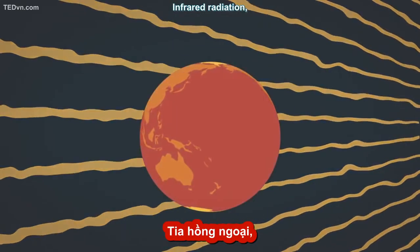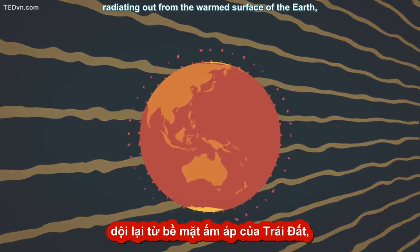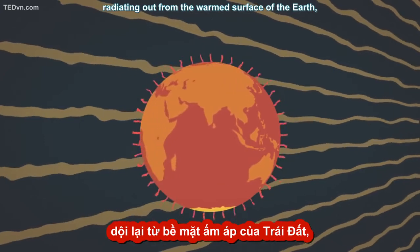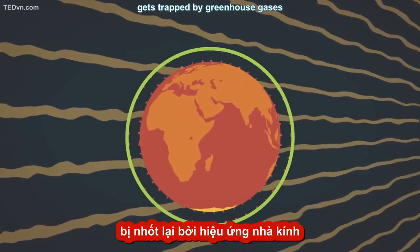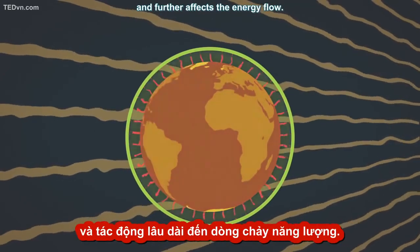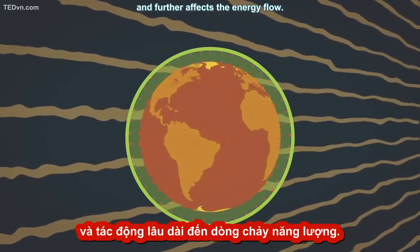Infrared radiation, radiating out from the warmed surface of the Earth, gets trapped by greenhouse gases and further affects the energy flow.